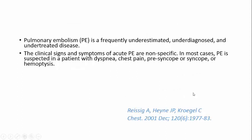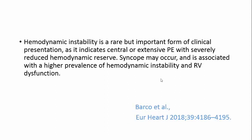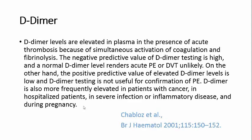Pulmonary embolism is a frequently underestimated, under-diagnosed, and under-treated disease. It's a tricky disease — in mild to moderate cases it has non-specific signs: chest pain, dyspnea, syncope, hemoptysis. In advanced situations you can see hemodynamic instability, which is what we are most mindful of because that's what we commonly see in the ICU. D-dimer is sensitive but unfortunately non-specific; many diseases can cause an increase in D-dimer.